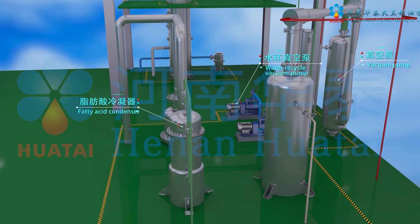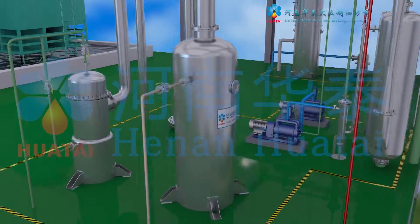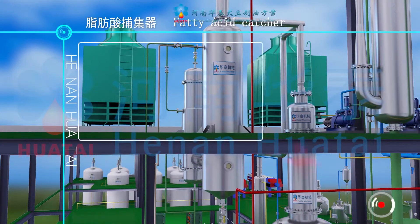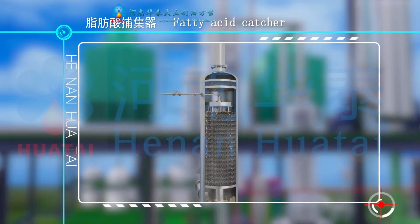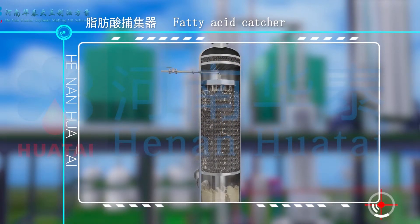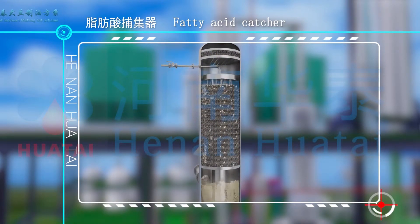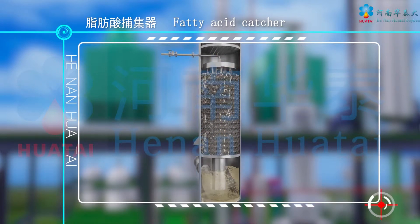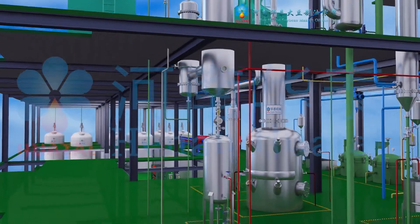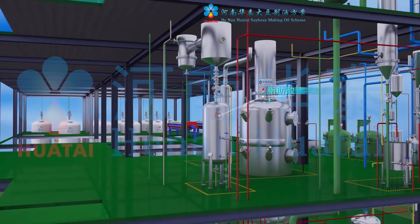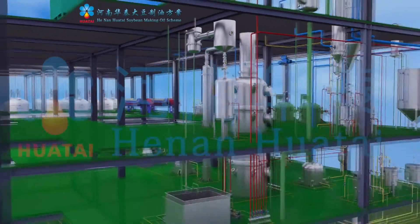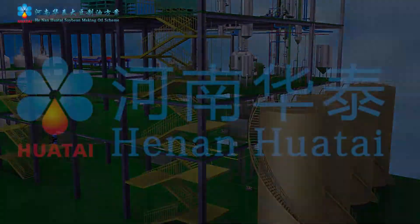The fatty acid gas from the deacidification shower and the deacidification-deodorization shower is conveyed to the fatty acid catcher. After centrifugal separation, the fatty acid liquid is recovered from the fatty acid recovery system. The fatty acid liquid is recovered to the temporary tank and, through the fatty acid pump, sent to the outer fatty acid tank.